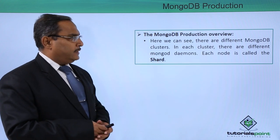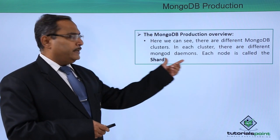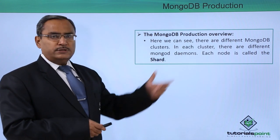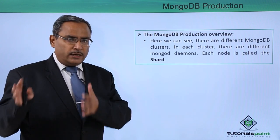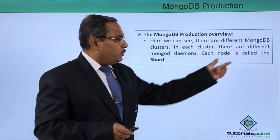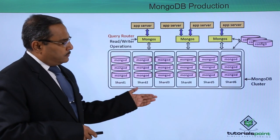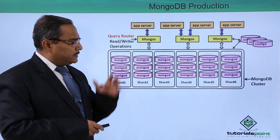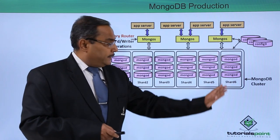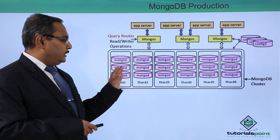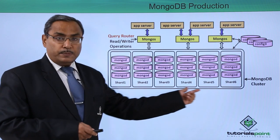Here we can see that there are different MongoDB clusters available, and in each cluster there are different MongoD daemons. MongoD daemons are the processes which will be executing to do the operations on the database. Each node is called a shard and they will be known as the respective shard. Look at this particular diagram — let me explain this diagram in a very elaborative way. This is known as the MongoDB cluster. These are known as the nodes, and these nodes will be called the shards. Here we have the respective shard numbers.